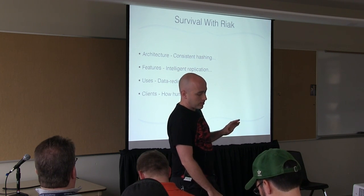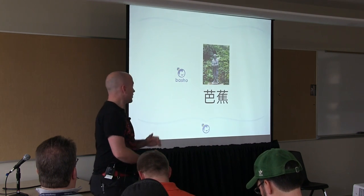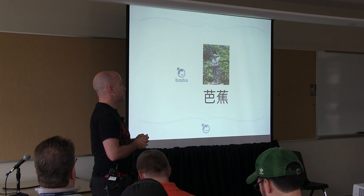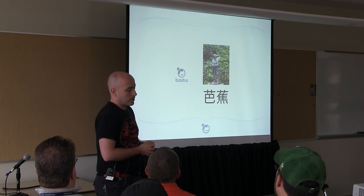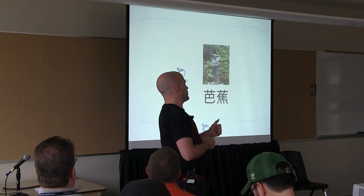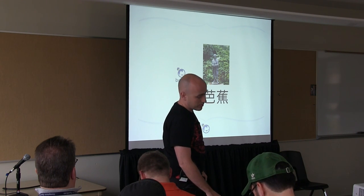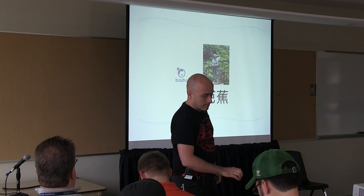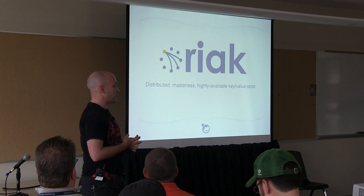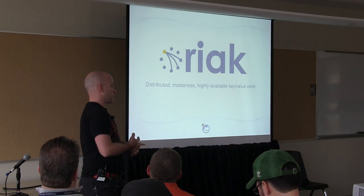A little background around Riak: it's made by Basho, who I do work for. Basho is named after a Japanese gentleman known for creating the haiku. Some people have pointed out he might not have actually been the person who created the haiku, but it was thought that he was — and that's why the company is called Basho. One of the things they make is Riak. They also make Riak CS, which is an object store — another distributed system that works very similar to S3.